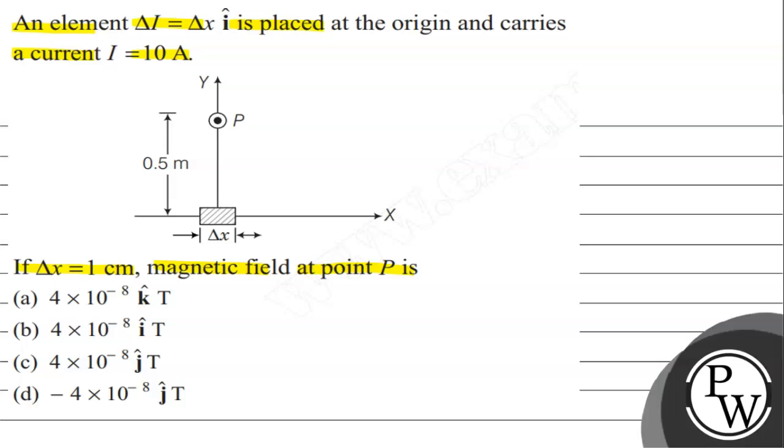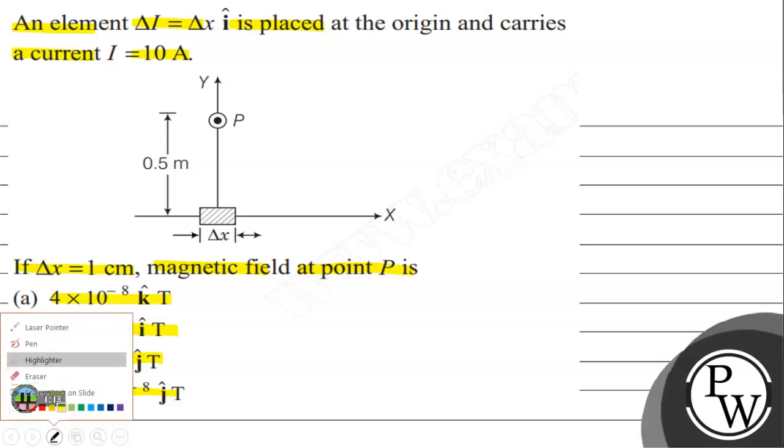The options are: (a) 4×10^-8 k̂ tesla, (b) 4×10^-8 î tesla, (c) 4×10^-8 ĵ tesla, and (d) -4×10^-8 ĵ tesla. To solve this, the key concept is the Biot-Savart Law.